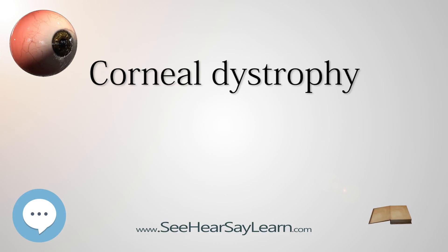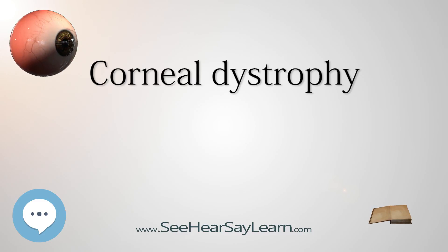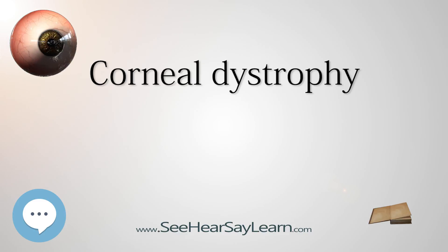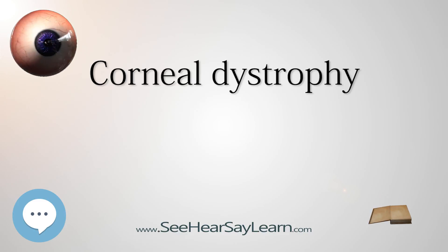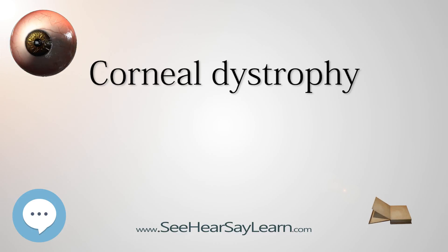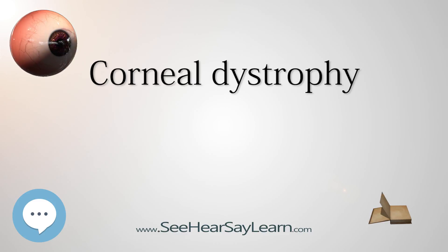Diagnosis can be established on clinical grounds and may be enhanced with studies on surgically excised corneal tissue and, in some cases, with molecular genetic analyses. Corneal dystrophies should be suspected when corneal transparency is lost or corneal opacities occur spontaneously, particularly in both corneas, especially in the presence of a positive family history or in the offspring of consanguineous parents.